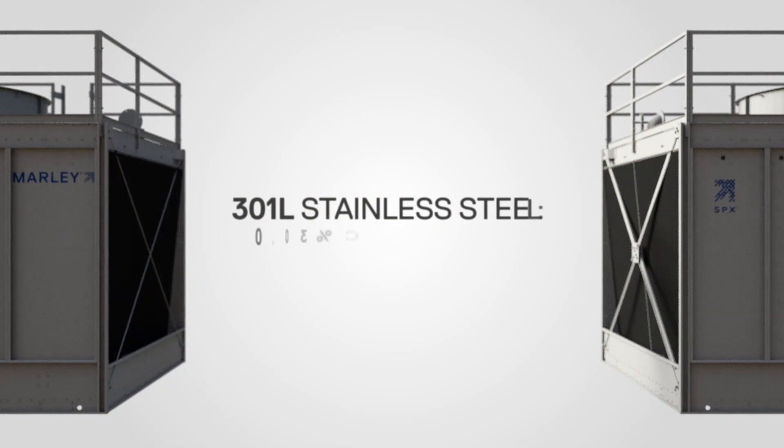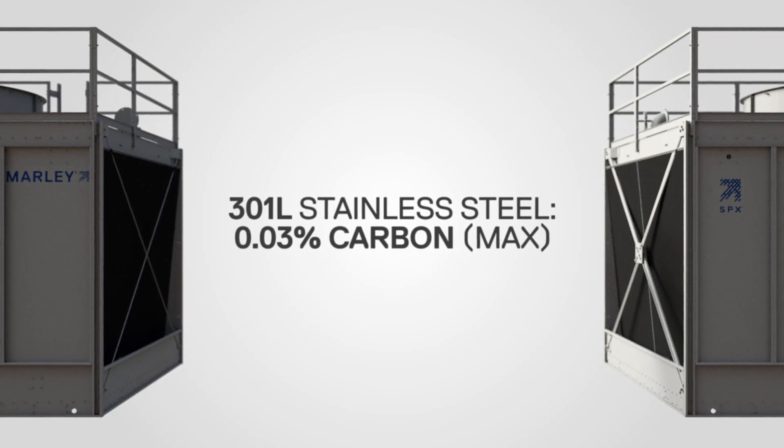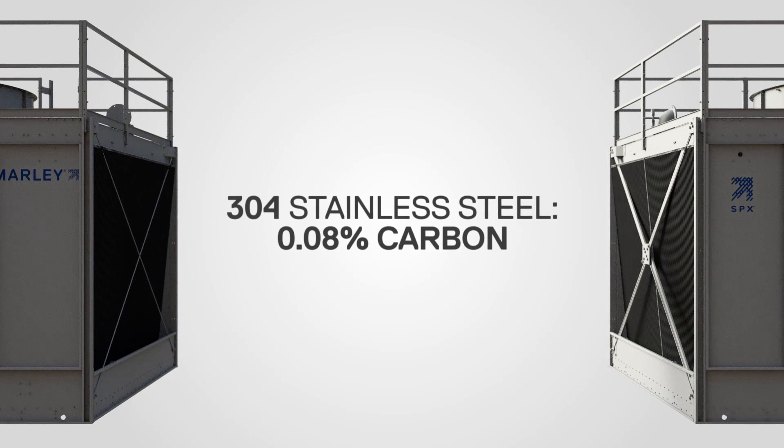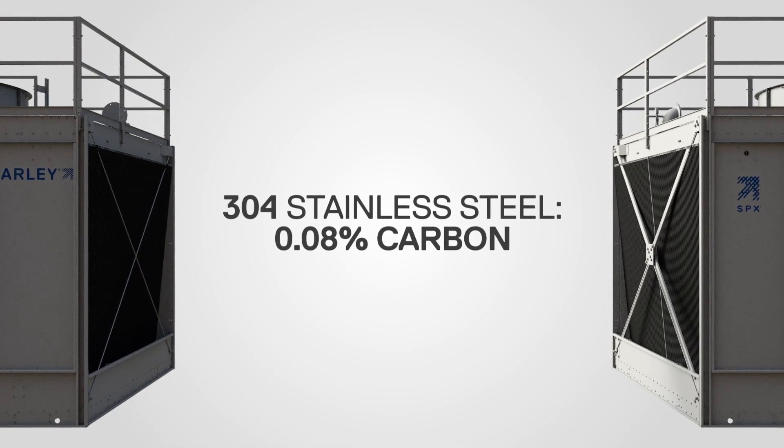304 and 301L have a few differences in chemistry. The main differences are chromium and nickel contents, which are very similar between the two. Now 301L is a low carbon version of 301, which has 0.03% carbon as a maximum limit for the carbon content. Carbon content for 304 is 0.08%. This slight difference in carbon content greatly affects the corrosion resistance between the two materials.